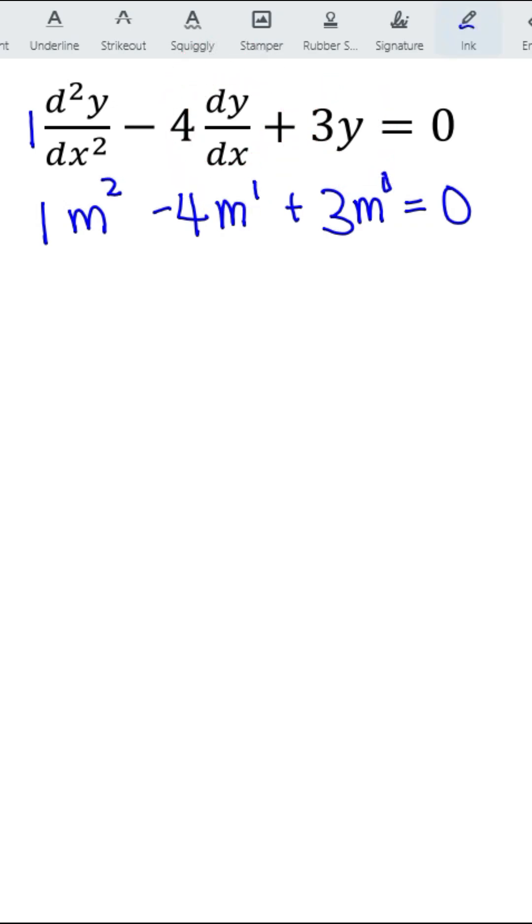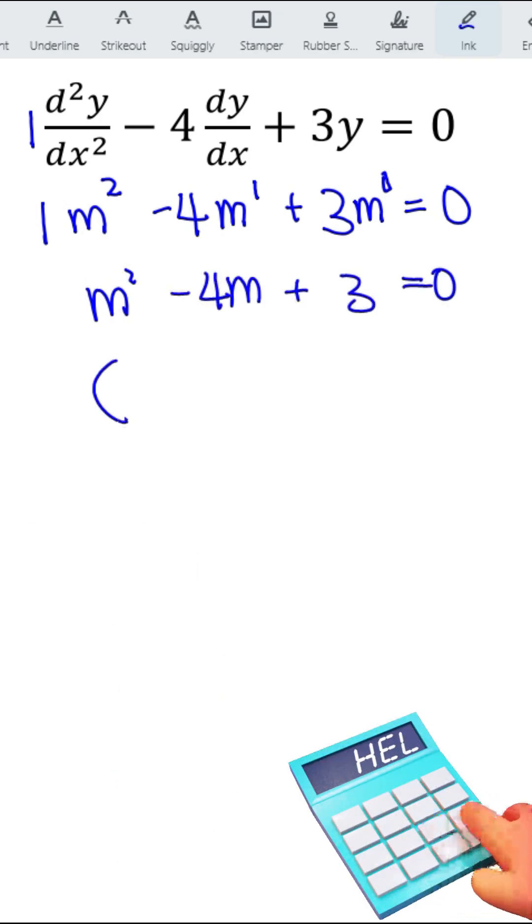which means that this is simply m squared minus 4m plus 3 is equal to 0. Let's factorize.